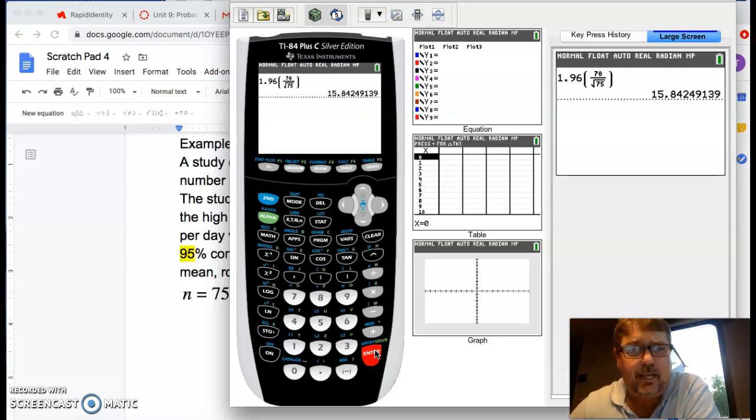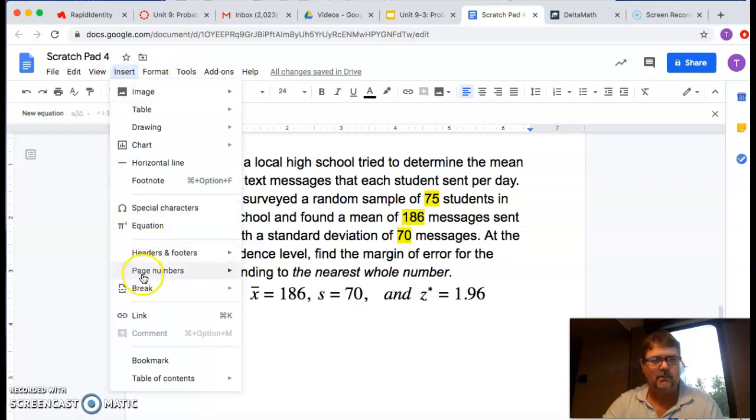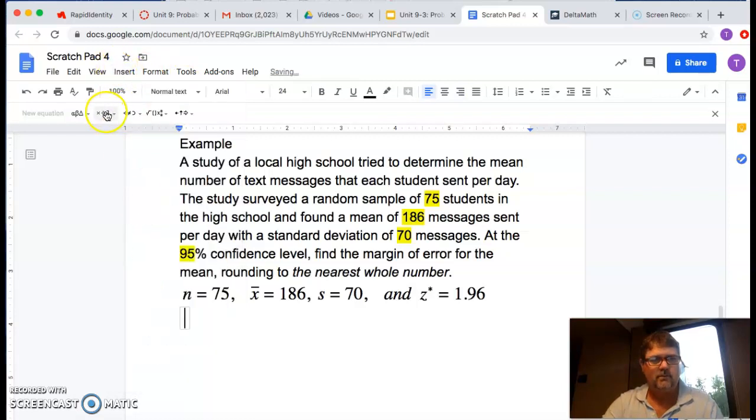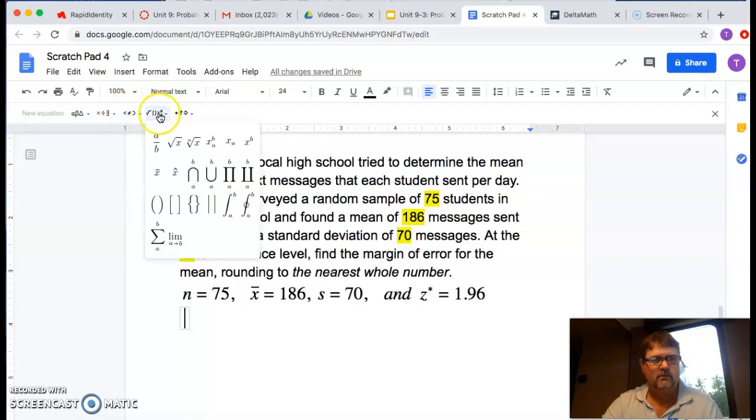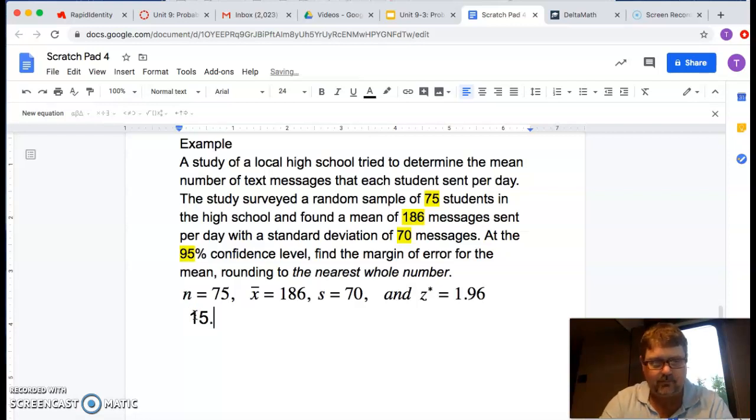So, it says 15.84, so we would write that down. So, about 15.84. So, let's see. We'll say approximately. So, we'll just write 15.84. 15.84. All right, let's make sure we're doing something. It says round to the nearest whole number. So, we would say it's approximately 16. Right?